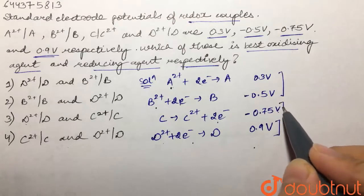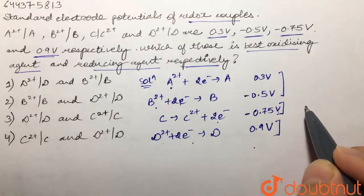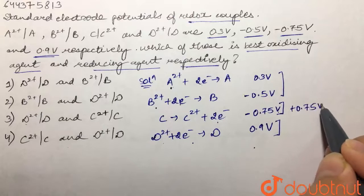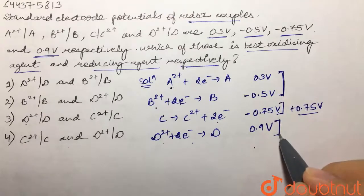So we will convert this oxidation potential into reduction potential so that we can judge them. Now this would be equal to +0.75V. So again, this is our reduction potential and these all are already our reduction potential.